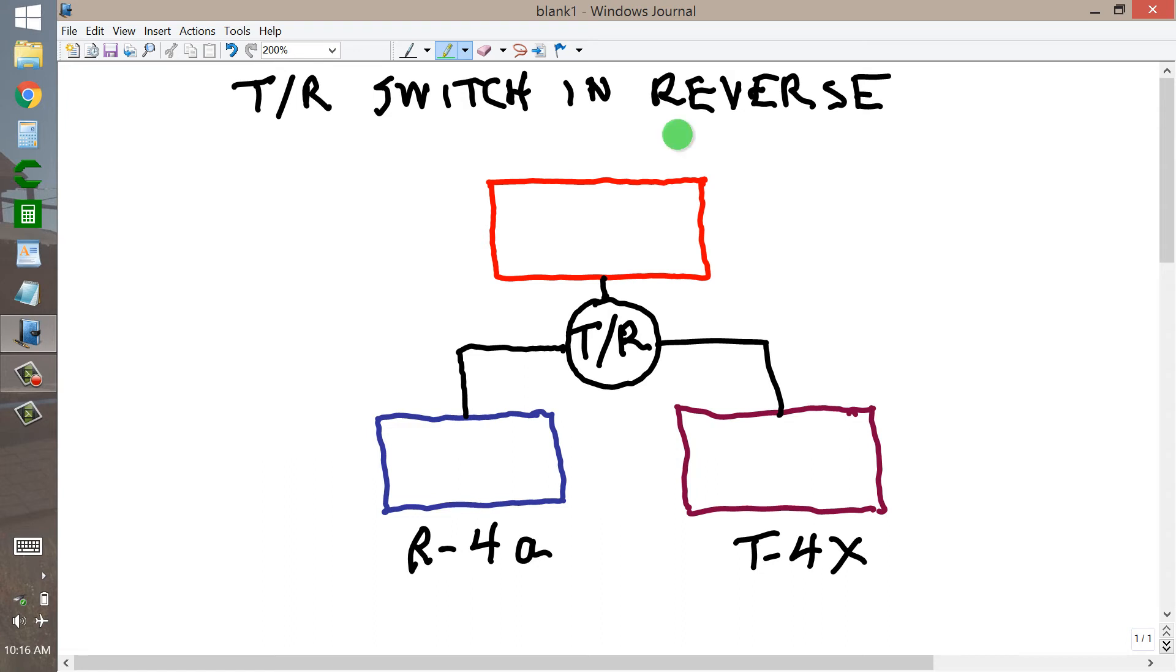But suppose you decided to devise a TR switch that would do exactly the reverse of a conventional TR switch. You would have your transceiver, such as the IC746 Pro ICOM radio or any other transceiver. It doesn't necessarily have to be full break-in, but it would be nice.